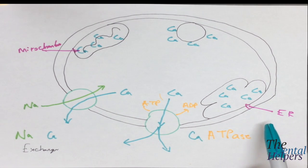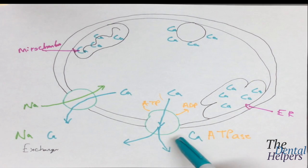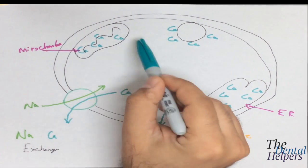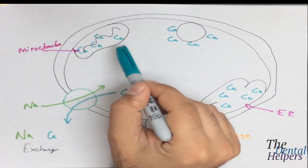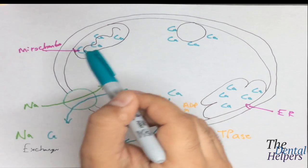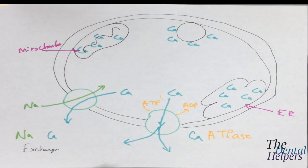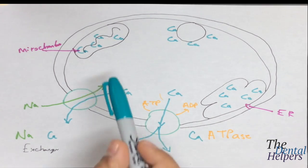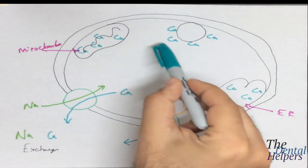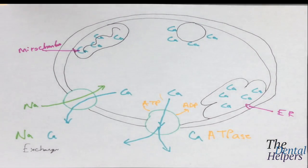The calcium ATPase returns calcium to the SR through primary active transport. The mitochondria itself can uptake calcium through binding proteins when calcium levels are high. So if there's too much calcium, either the mitochondria or the binding proteins serve as the method to remove calcium so that everything works properly.